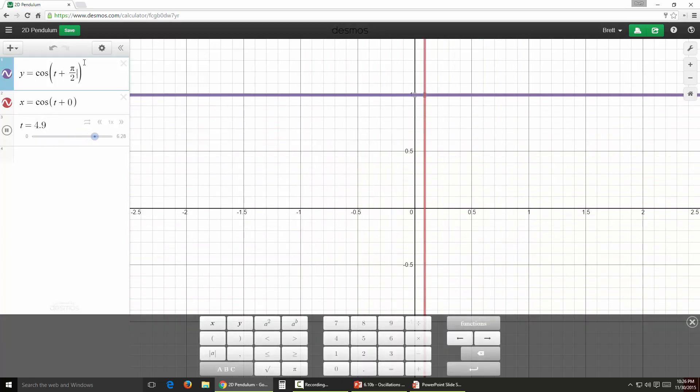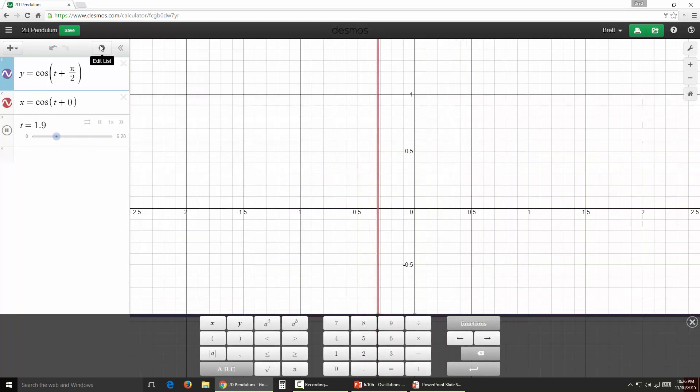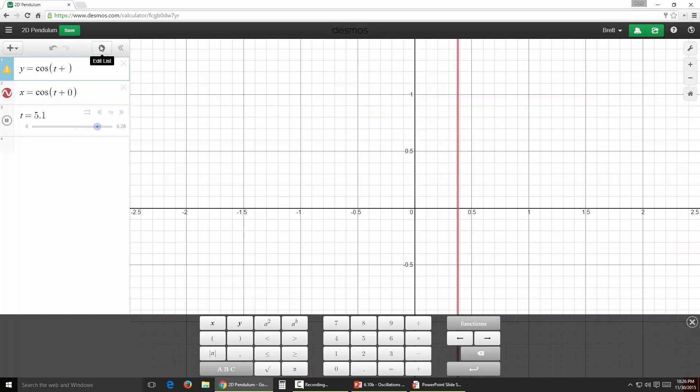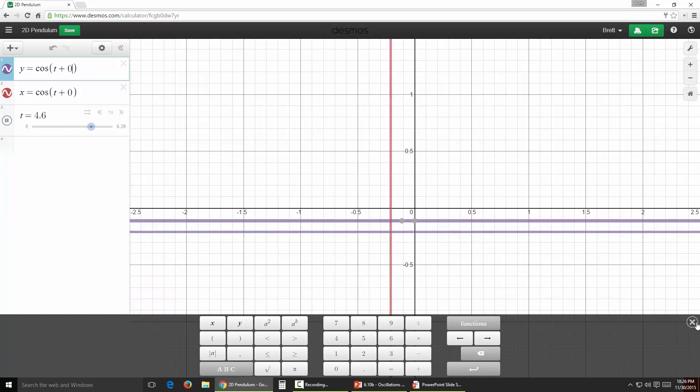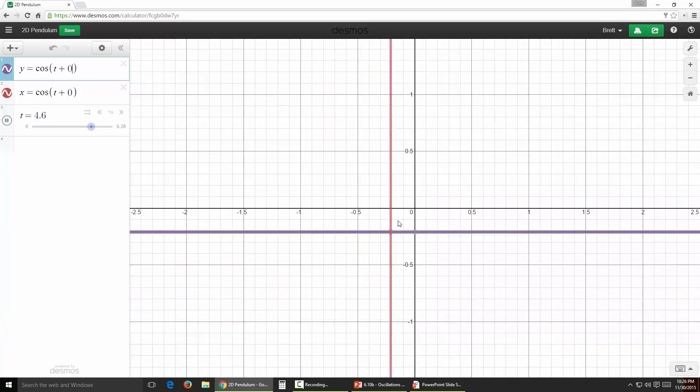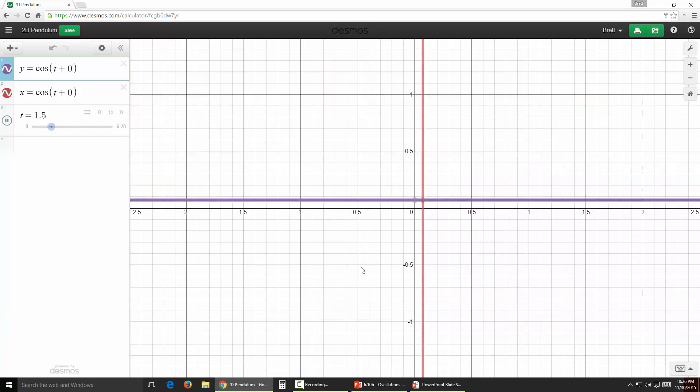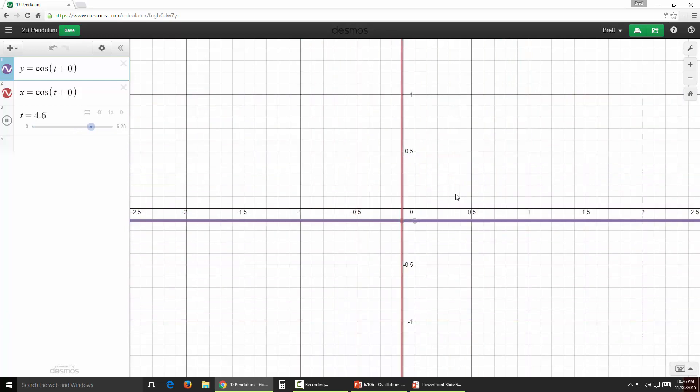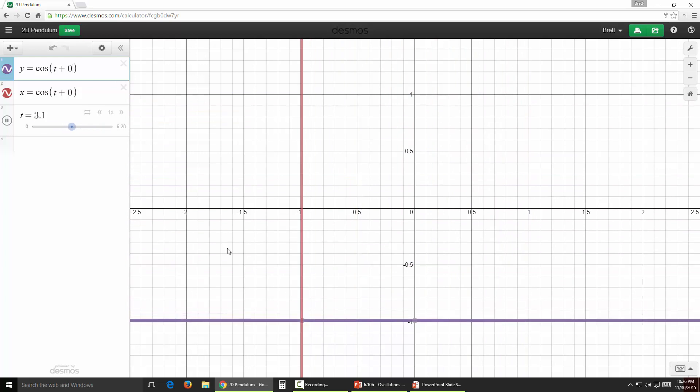If they were in phase, let's go ahead and adjust this. If we make this phase angle zero, then they will both be at a maximum at the same time and a minimum at the same time. Essentially, you'll just have it oscillate at a different angle, but in a straight line. You can get a variety of other things.